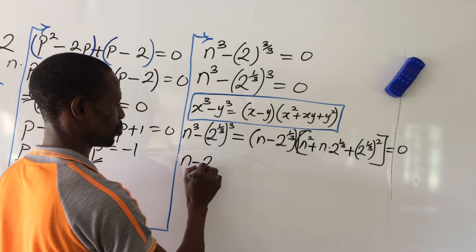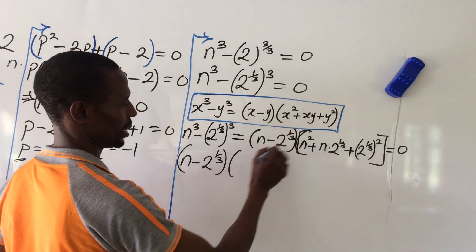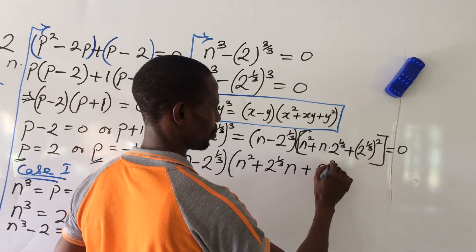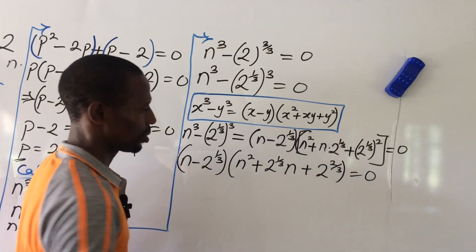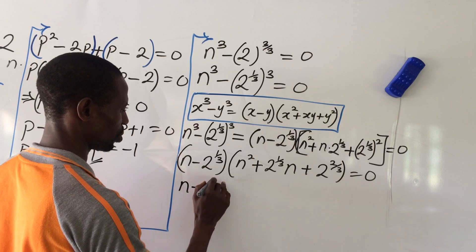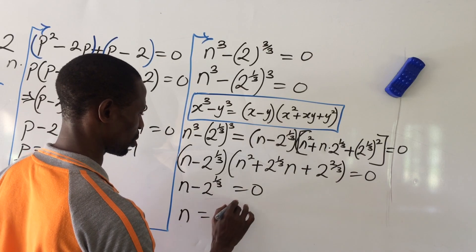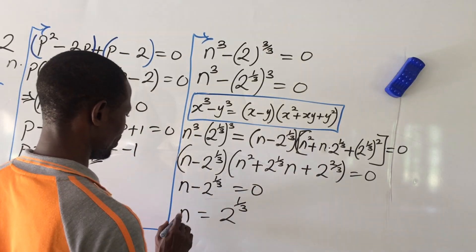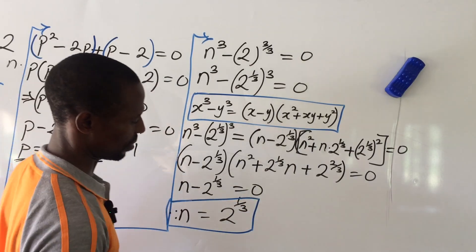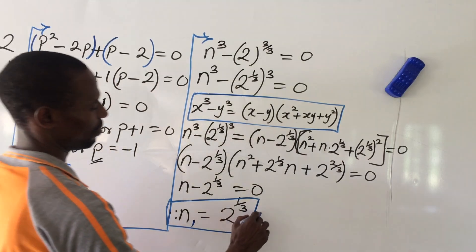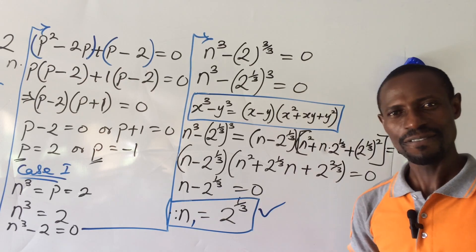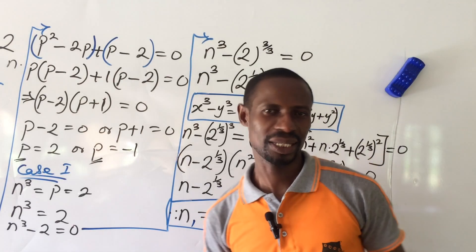Applying the zero product rule, we get n minus 2 to the power of 1/3 equals 0, giving n equals 2 to the power of 1/3. This is our first real root, n1. I have substituted this value into our original equation and it satisfies it, confirming this is the first real root of this international math olympiad problem.